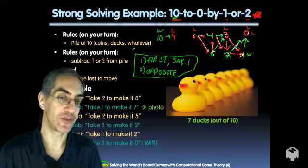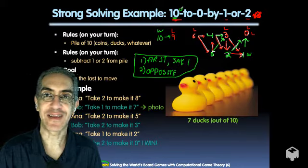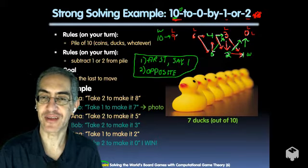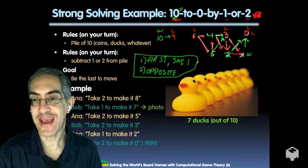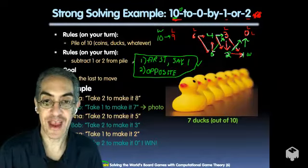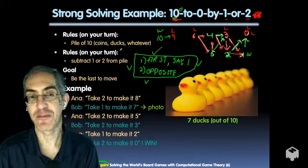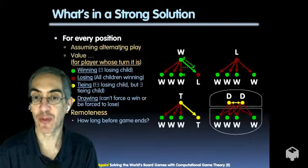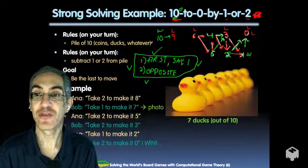What if we change to 100 to zero by 1 or 2? The closest multiple of three to 100 is 99, so take one to start. For 1000, take one to reach 999. The logic scales to any starting number — find the nearest multiple of three below it and take enough to get there first. We used the recursive logic to solve this manually.